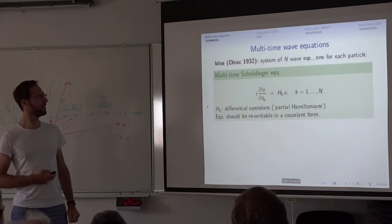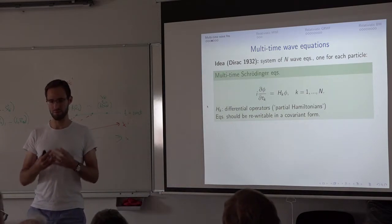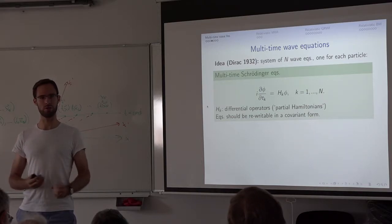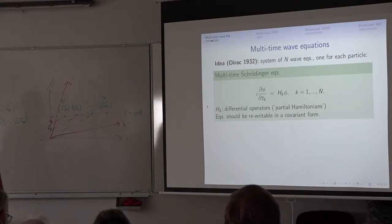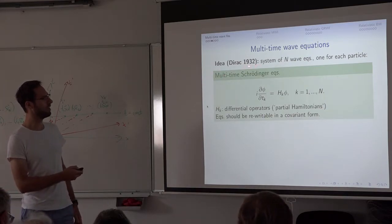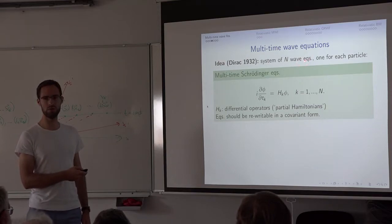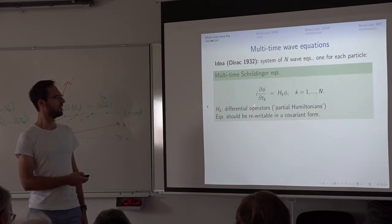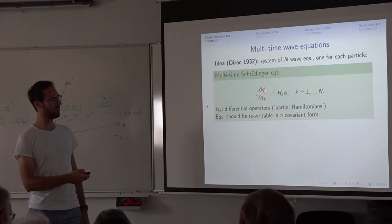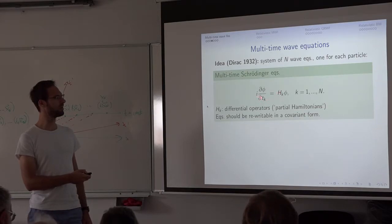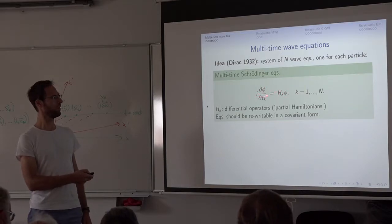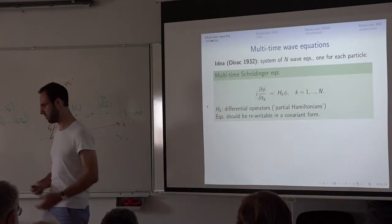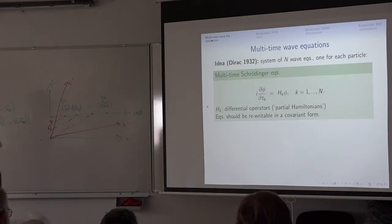The next question is: how does something which contains n time variables evolve, or what kind of equation does it satisfy? The most straightforward idea, due to Dirac, is that one should have a system of n wave equations, one for each particle, one for each time — meaning the wave function ψ has to satisfy a Schrödinger-like equation in each of the time variables simultaneously, so n of these equations simultaneously. They involve Hamiltonians, and each is supposed to be differential operators called partial Hamiltonians, as opposed to integral operators. I'll write this in a Hamiltonian form.